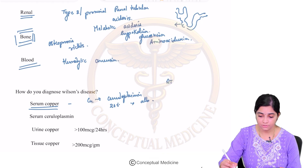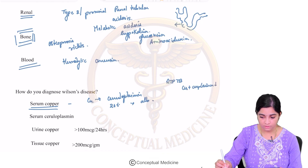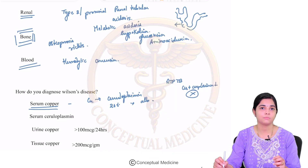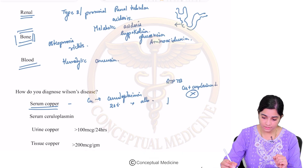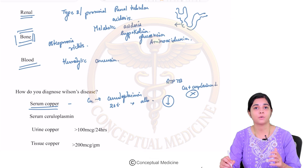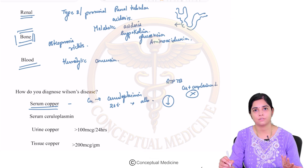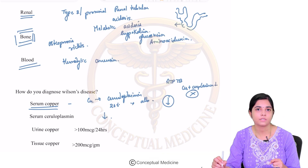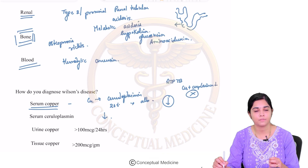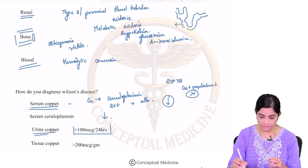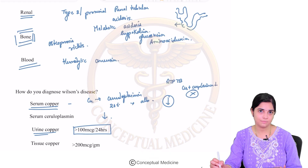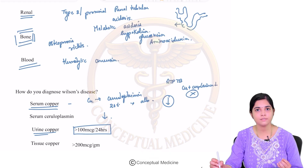In Wilson's disease, the defect is in ATP-7B where the copper-ceruloplasmin binding itself is not there. This is affected, and there is a defect in the removal of copper — hence copper accumulates in the liver. So serum copper is reduced because what we measure is that which is bound to ceruloplasmin. Serum copper is reduced, and similarly serum ceruloplasmin levels are also reduced because the binding itself is not happening. However, the urinary copper excretion is more than 100 micrograms in 24 hours.